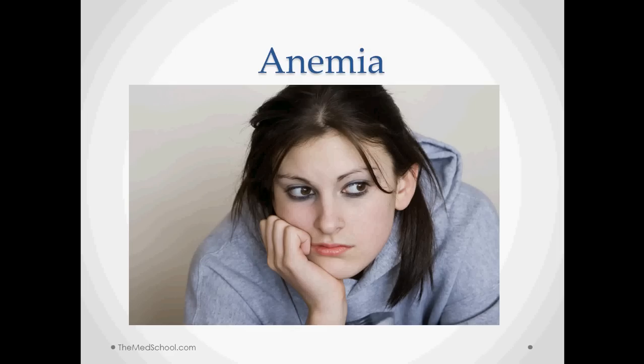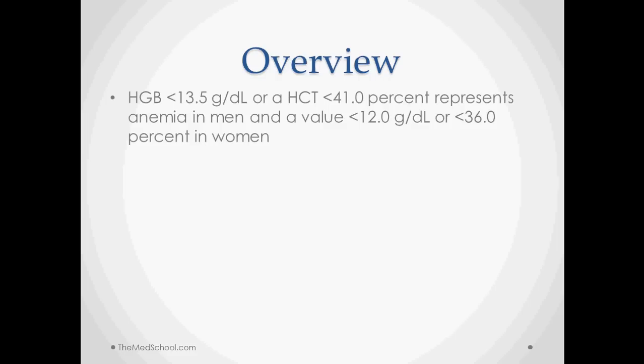Sometimes it can be confused with depression. But the definition of anemia is either a hemoglobin count that's low or a hematocrit that's low. So hemoglobin under 13.5 for men or 12 for women, hematocrit under 41% for men and 36% for women. It just means that we have a reduced ability to carry oxygen to the body.